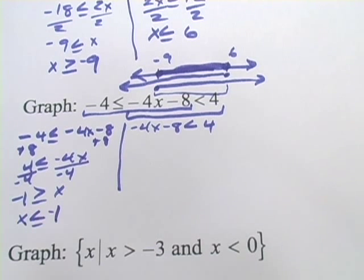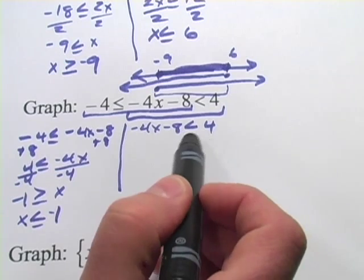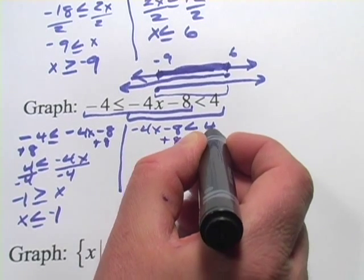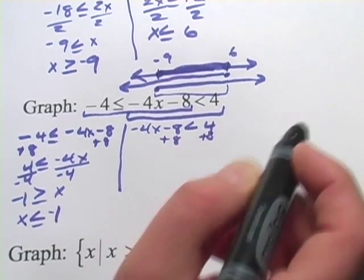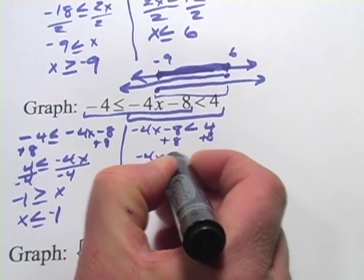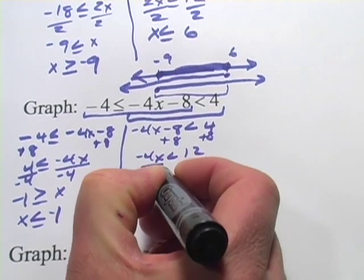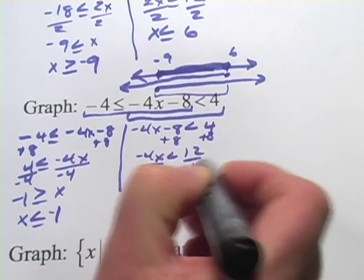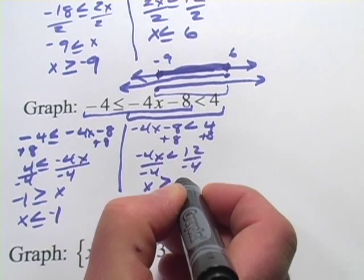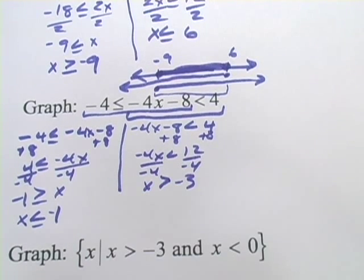On the other side we do the same thing: add 8 first, giving negative 4x is less than 12, then divide by negative 4 and remember to flip the sign, giving x is greater than negative 3.